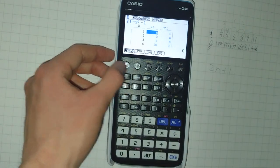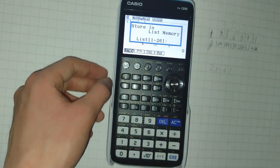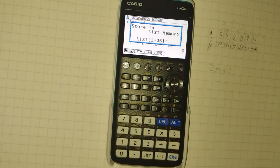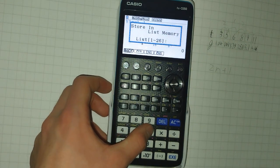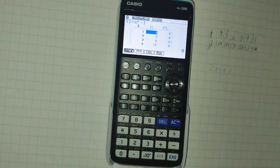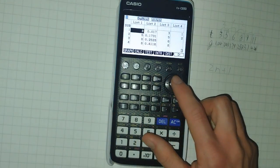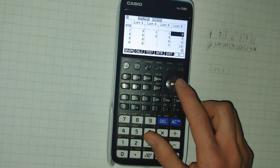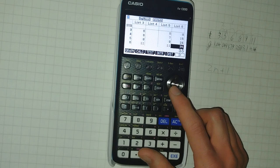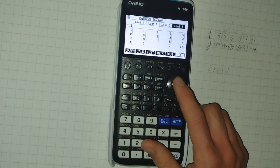We can then click option and F1 for list mem. And we can select a list store. I'll select list six. Returning to stats mode, we can see that list six now contains the sequence we've just defined in table mode.